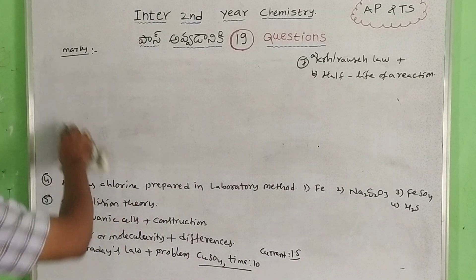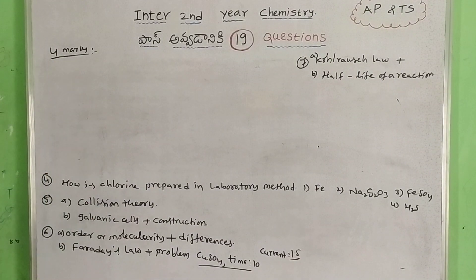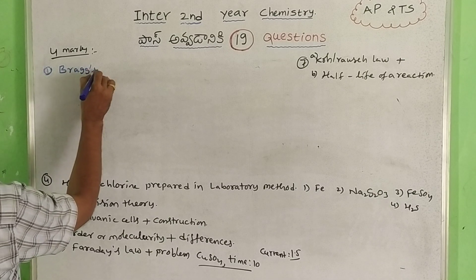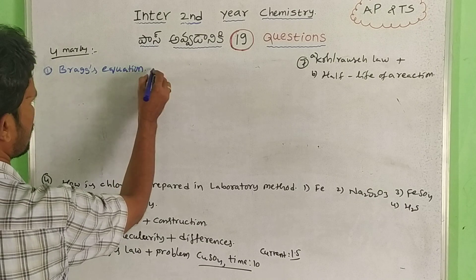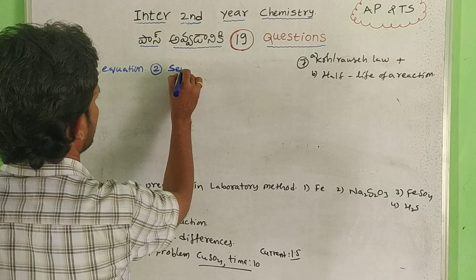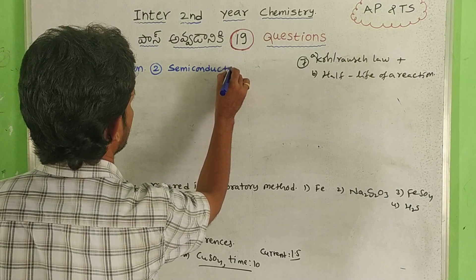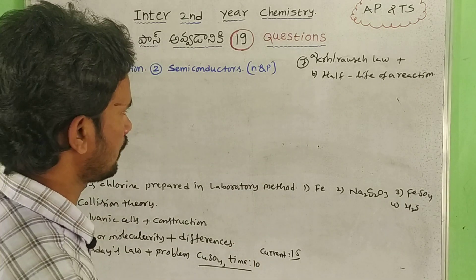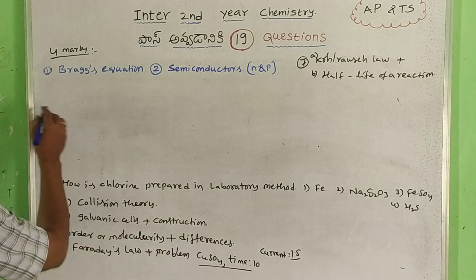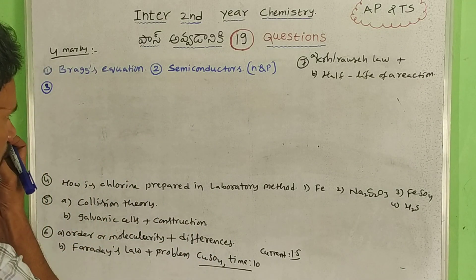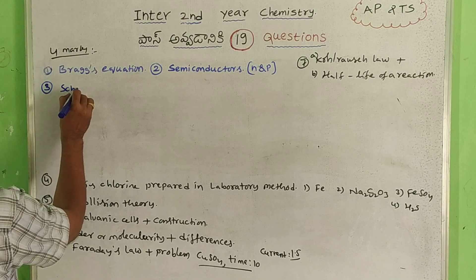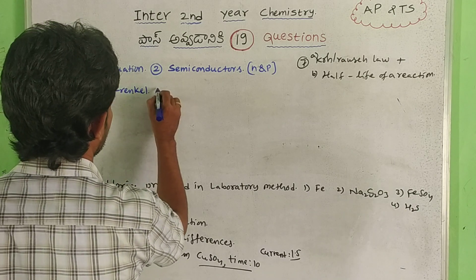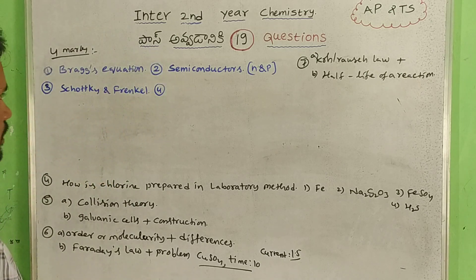4-mark short questions: first one — solid state, Bragg's equation. Second one — semiconductors: n-type and p-type semiconductors are the two main types.